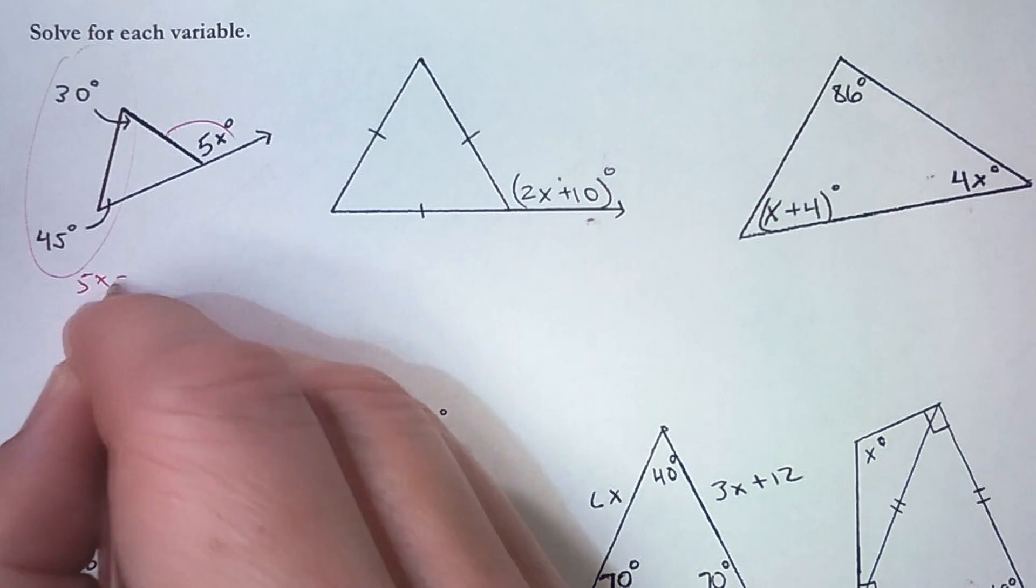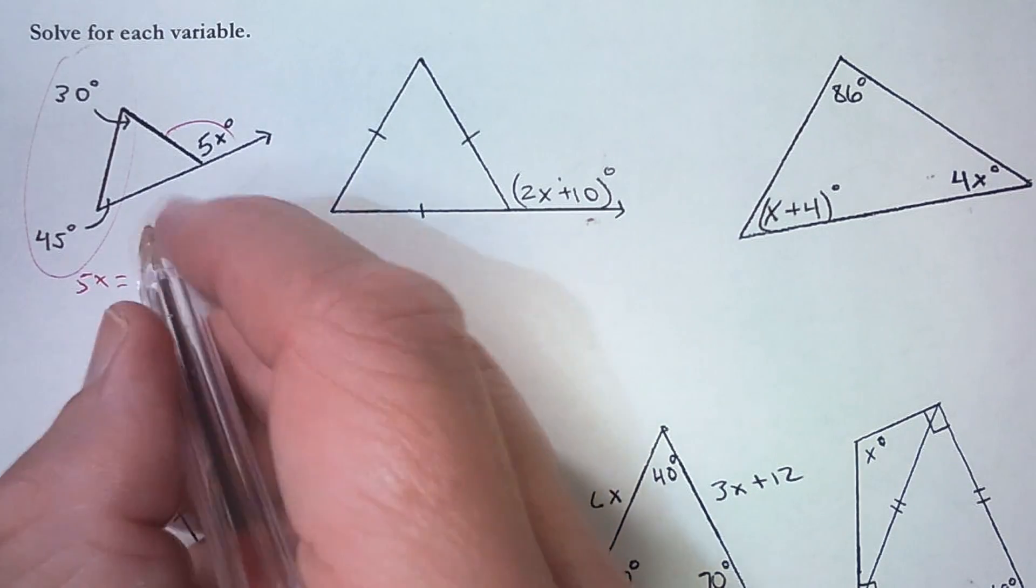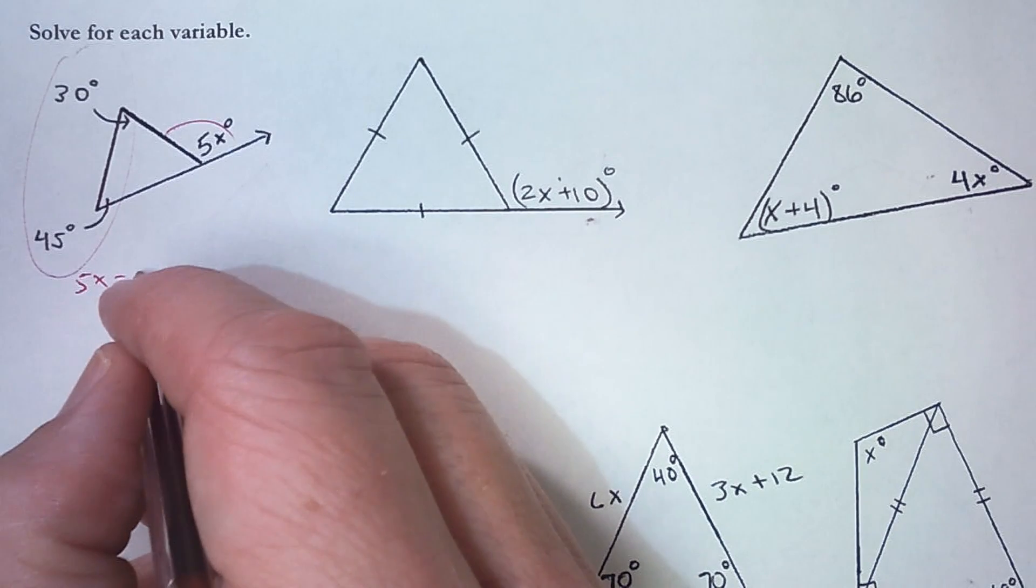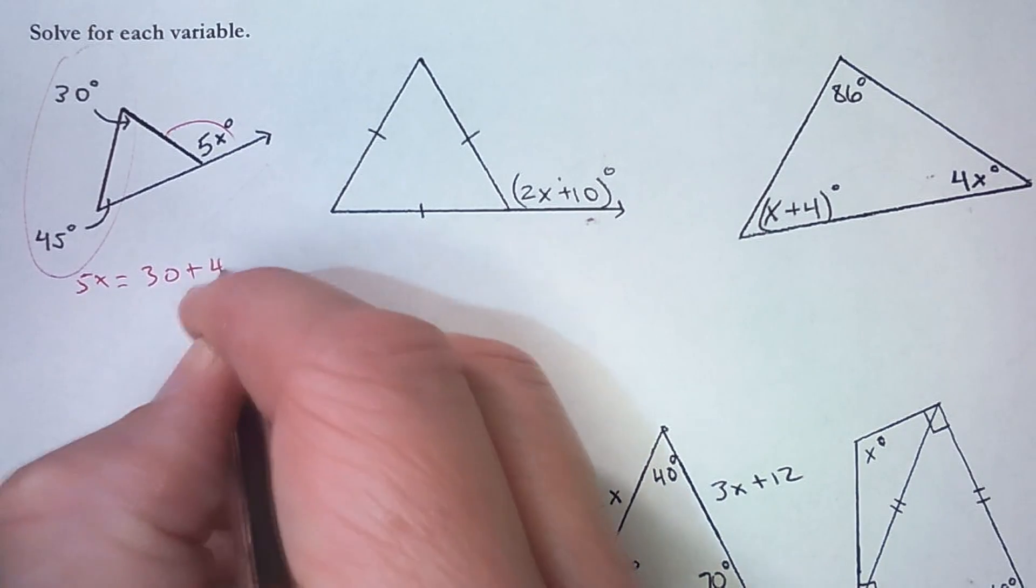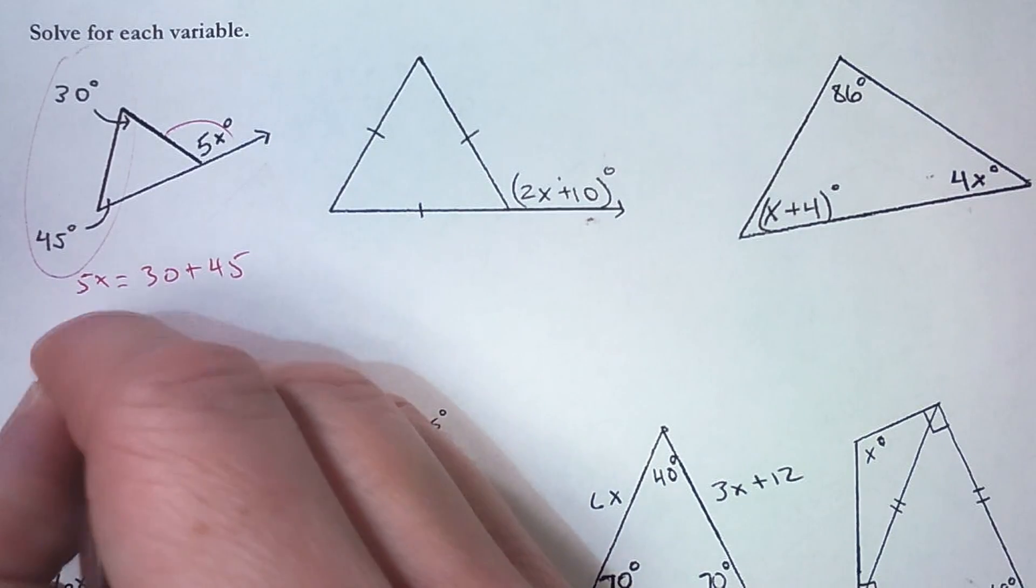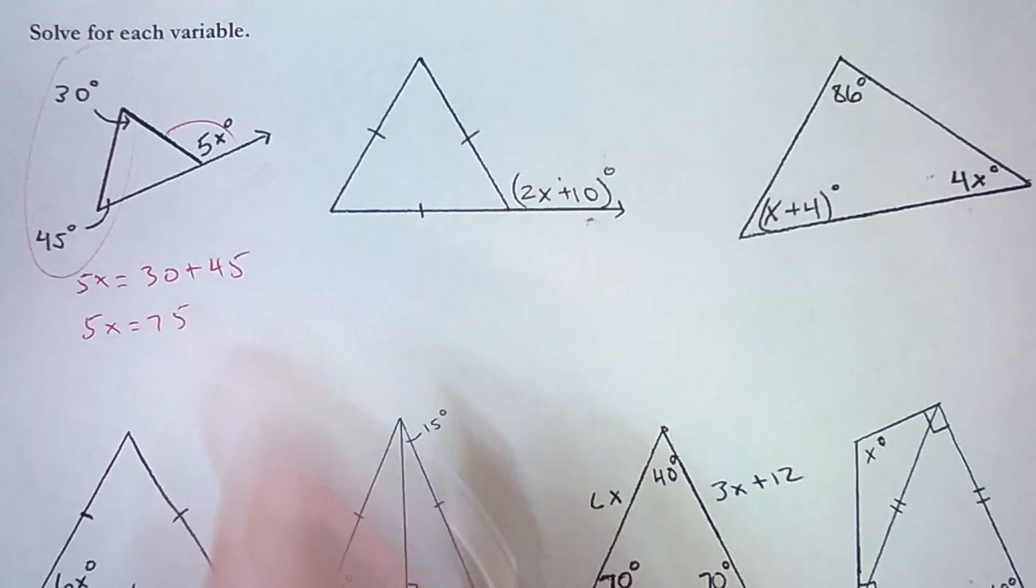So 5x, the exterior angle, is equal to the sum of these remote or far away interiors, so it equals 30 plus 45. 30 plus 45, that's 75. So 5x equals 75.